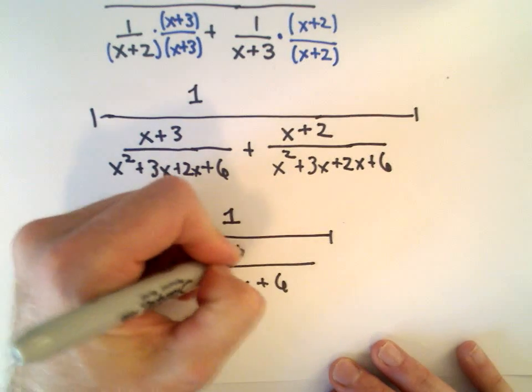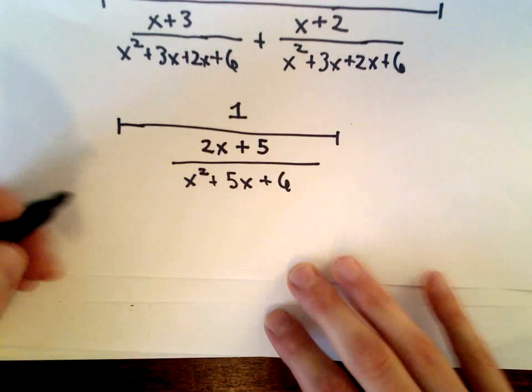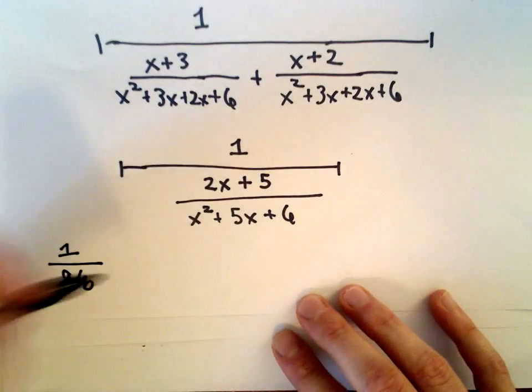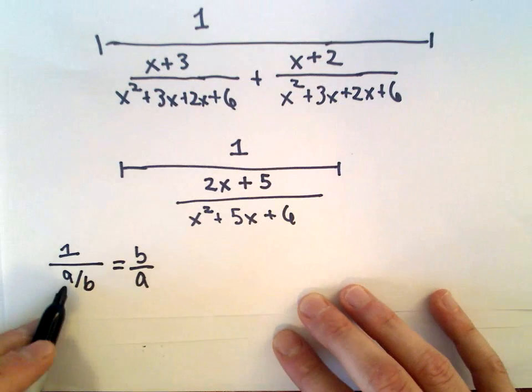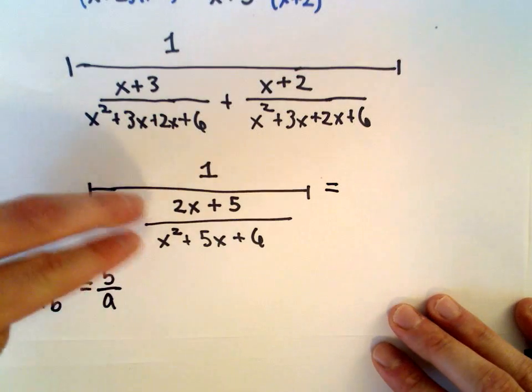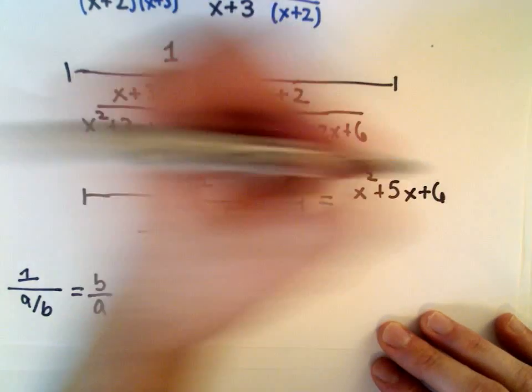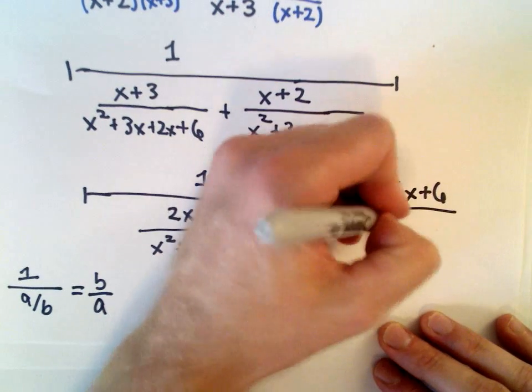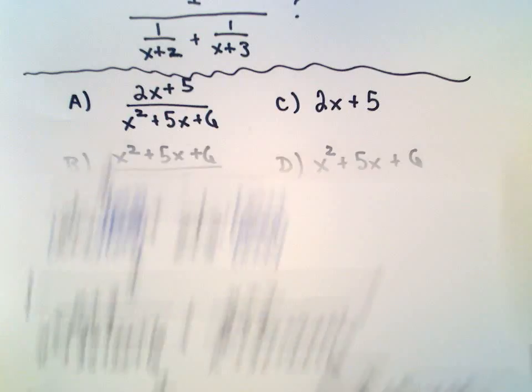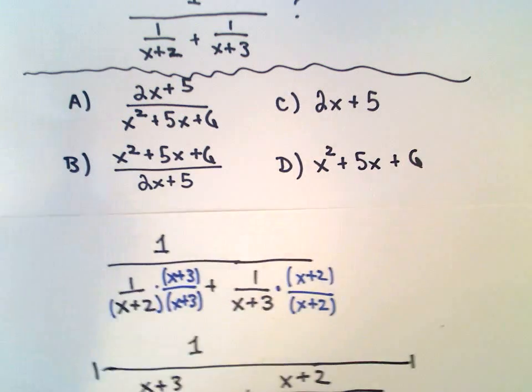If you take 1 over a fraction, for example 1 divided by (a/b), it just flips the fraction to b/a. So in this case, I have 1 over this fraction, which flips it. I get (x² + 5x + 6) divided by (2x + 5), and that's the answer. That was answer choice B.